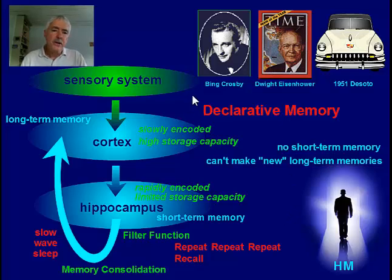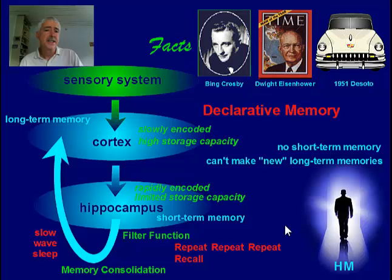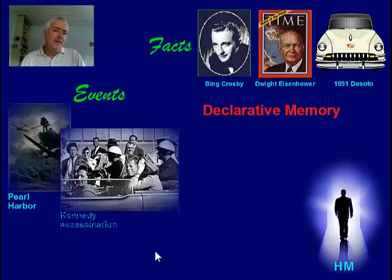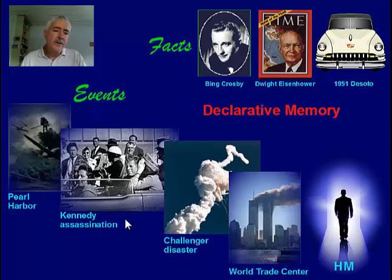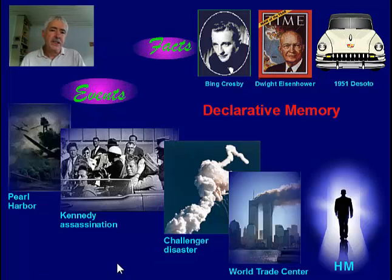The type of memory we've been discussing is called declarative memory — a memory for facts. 'I declare Bing Crosby is a great singer.' 'I declare Dwight Eisenhower was President of the United States.' So it's a memory for facts and also for events. H.M. has a good memory only for events before 1953, such as Pearl Harbor during World War II.